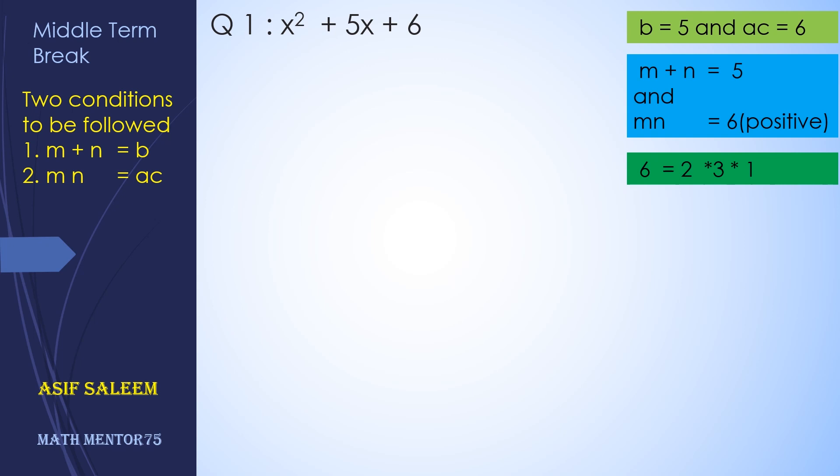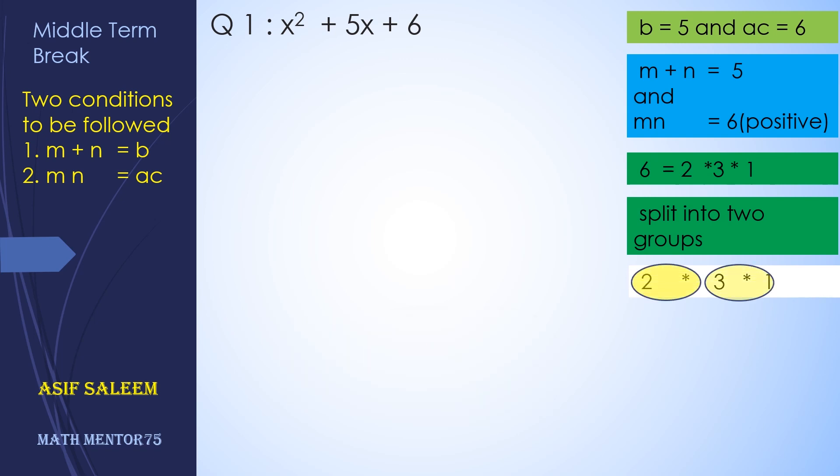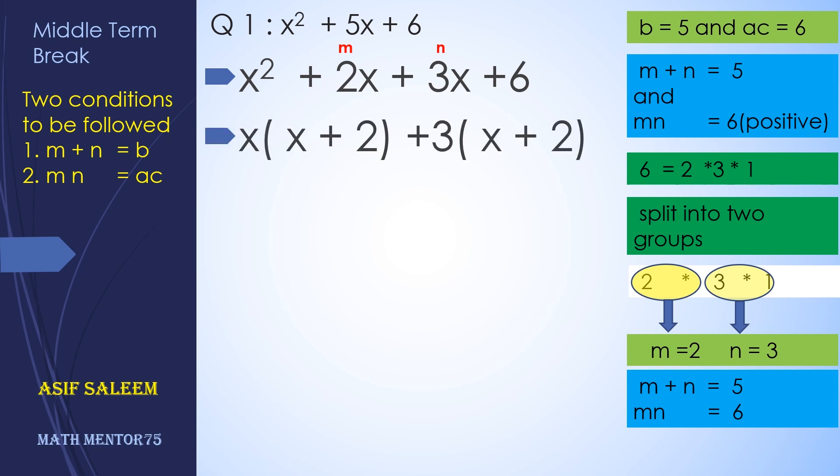Now these are the factors of 6: 2, 3, and 1. We are going to split them into two groups. Let's say first group contains 2 and the second group contains 3 and 1, so m is 2 and n is 3. Now let's see whether the condition is fulfilled: m + n is 5, mn is 6, which means we can factorize. We can write 5x as 2x + 3x. Take common from the first and last, and then finally we have our required factorization.